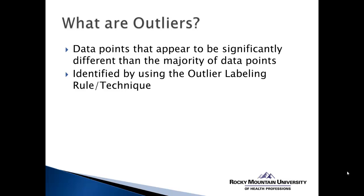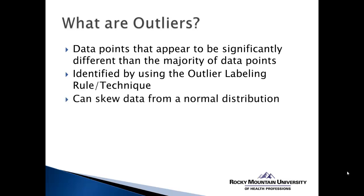Once you've identified those outliers, if we do have any, we need to figure out what we're going to do about them. This is important because outliers can significantly skew data from a normal distribution. A single score may pull the mean in one direction or another, misrepresenting the data. If the data no longer represents a normal distribution, that limits our choices for how we could analyze it — normal distribution being one of the primary assumptions for parametric statistics.